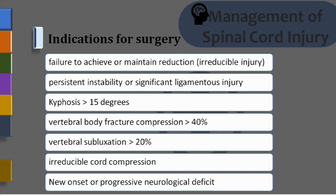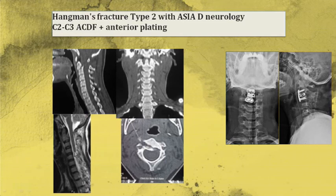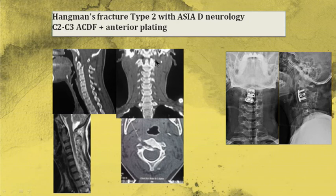Now we will go through few case examples — cervical, thoracic, and lumbar spine cases of different types of fractures and how they were managed. In the first cervical case, there is injury at C2-C3. There is forward subluxation of C2, which is called Hangman's fracture. This was stabilized by a cervical plate and cage.